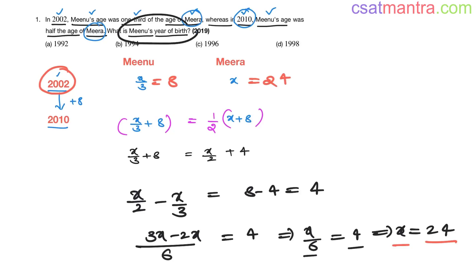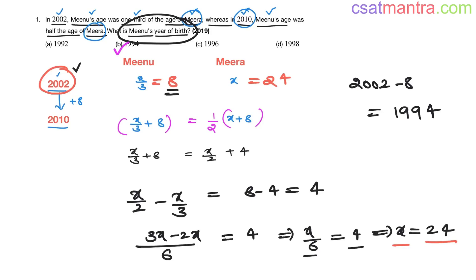Now we want Mino's year of birth. In 2002, Mino is 8 years old. So Mino's birth year will be 2002 minus 8, which is 1994. Being 8 years old means she was born 8 years before, that's why I subtracted 8 from 2002. So our answer is B. Very simple problem — just approach it sentence by sentence. Divide and rule.